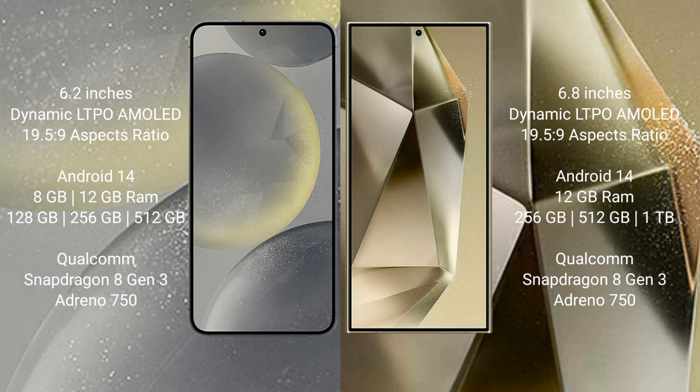The Samsung Galaxy S24 Ultra comes with 12GB RAM and 256GB, 512GB, or 1TB internal storage. It is also powered by the Qualcomm Snapdragon 8 Gen 3 processor with GPU Adreno 750.